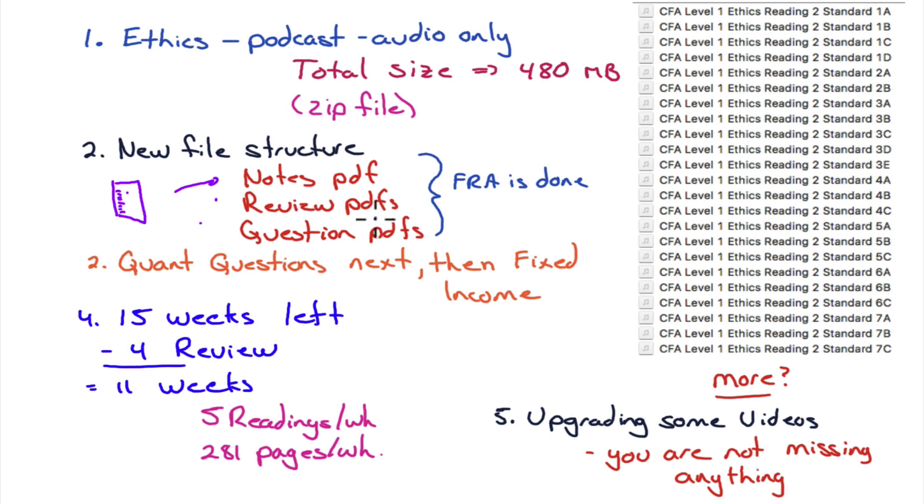Then the question PDFs are separate. So there's three files: there's the main notes file, there's the review PDFs, and finally the question PDF. So if I keep adding to questions as time goes on, that's the only thing that has to change. I've done this for FRA. I'm now going to move on to quant and then fixed income. I will do the same structure in quant and fixed income along with a title page.